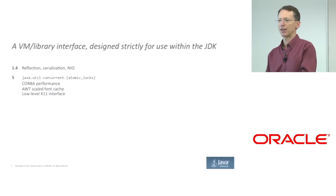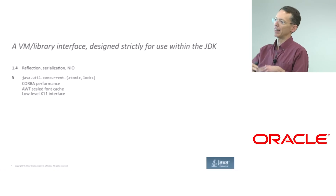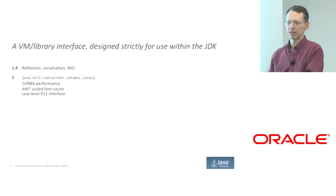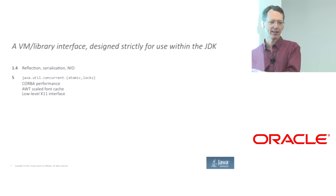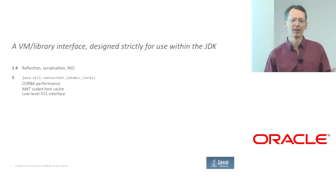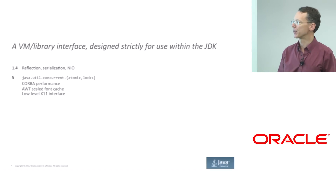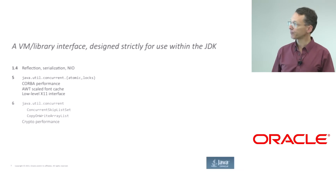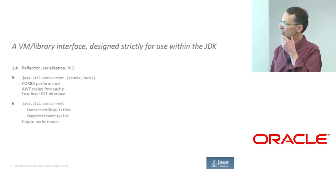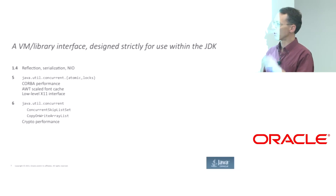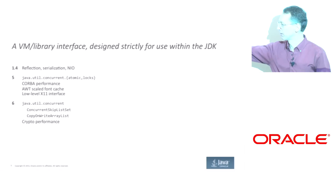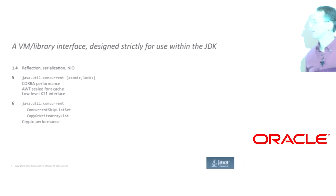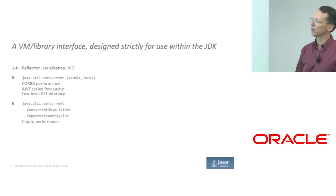It was used for the AWT scaled font cache and the low-level X11 interface. The X11 interface for AWT was originally written as a bunch of JNI calls against XLib, which is slow for the obvious reasons, so we rewrote it all with Unsafe, and that was a big improvement. In Java 6, there was more stuff in java.util.concurrent, and it was also used to speed up some crypto algorithms.